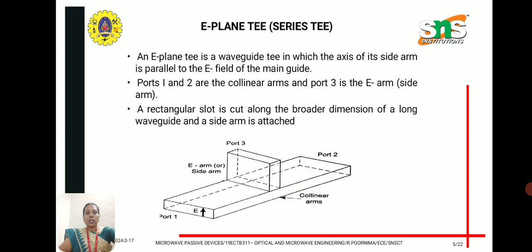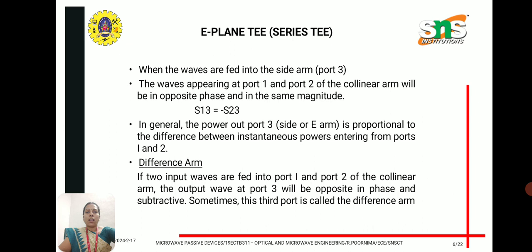The first type is the E-plane T, also known as the series T. Port 1 and port 2 are collinear arms forming the main waveguide. The side arm is attached to the width of the waveguide, parallel to the electric field of the main waveguide. A rectangular slot is cut along the broader dimension of the main waveguide and the side arm is attached. This side arm is known as the E-arm.